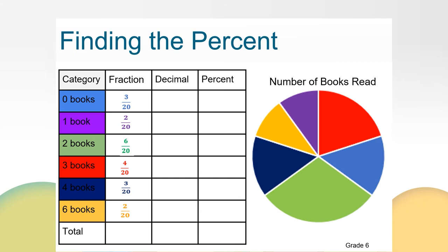Let's start with 3/20ths. For this one, I would like to use a calculator. 3 divided by 20 is equivalent to 15 hundredths, which is the same as 15%. I can also see that the category 4 books has the same fraction, so 15% of the students read 0 books and 15% of the students read 4 books. The percentages are the same.